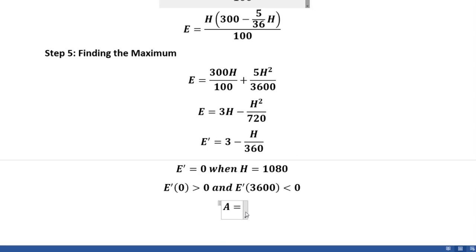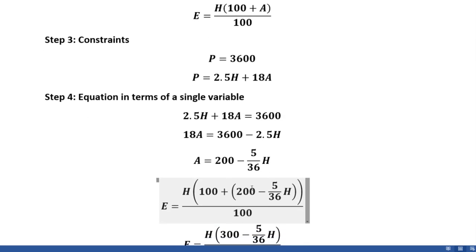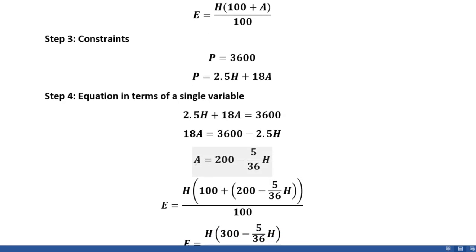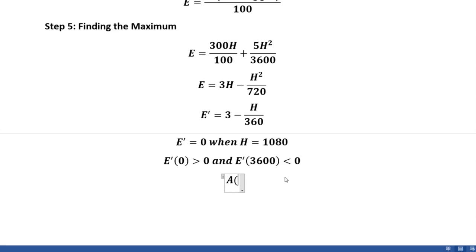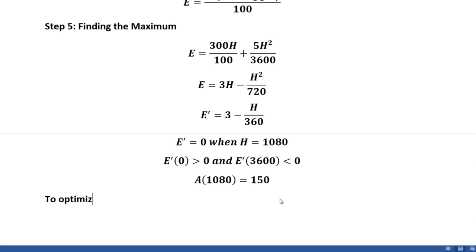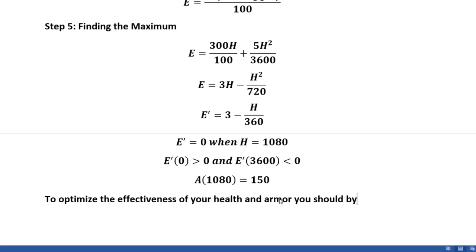Now, as you may recall, back when we were finding our equation in terms of a single variable, we had a = 200 − (5/36)h. Now that we know the equation is optimized when h = 1080, we can plug 1080 into that equation, which gives us a = 150. So to optimize your effective health and armor, you should buy 150 units of armor and 1080 units of health.